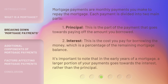Mortgage payments are monthly payments you make to repay the mortgage. Each payment is divided into two main parts. 1. Principal — this is the part of the payment that goes towards paying off the amount you borrowed. 2. Interest — this is the cost you pay for borrowing the money, which is a percentage of the remaining mortgage balance. It's important to note that in the early years of a mortgage, a larger portion of your payments goes towards the interest rather than the principal.